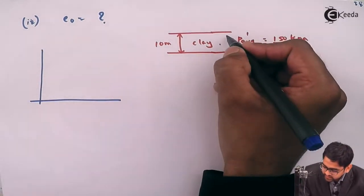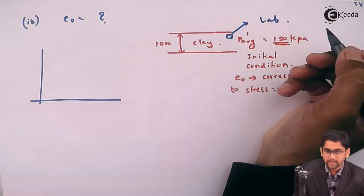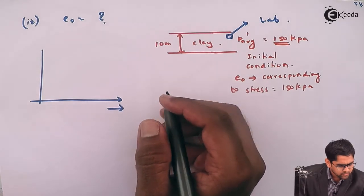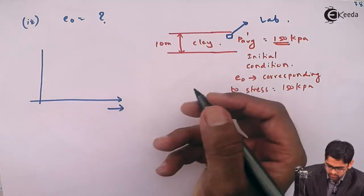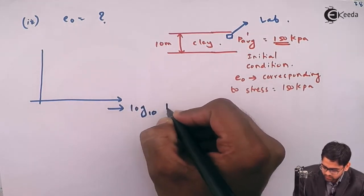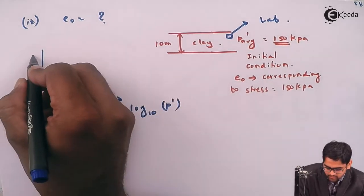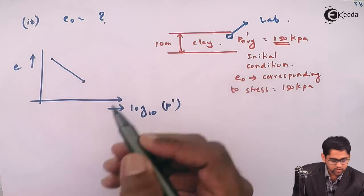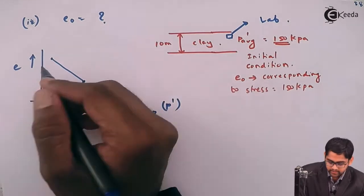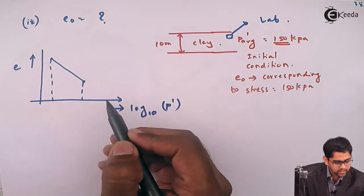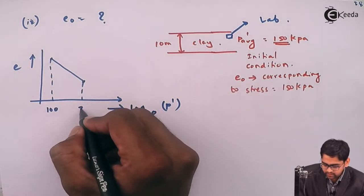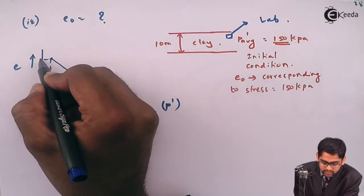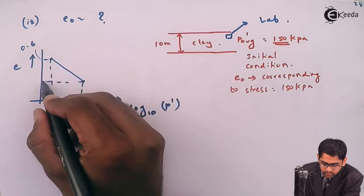We have taken a sample of the clay, tested it in the lab, and the lab results show a log p dash versus e curve. The void ratio decreased from 0.6 to 0.5 by increasing the stress intensity from 100 to 300 kilo Pascals. So on the curve, 100 kPa corresponds to e = 0.6, and 300 kPa corresponds to e = 0.5.